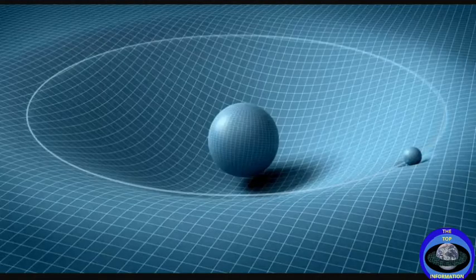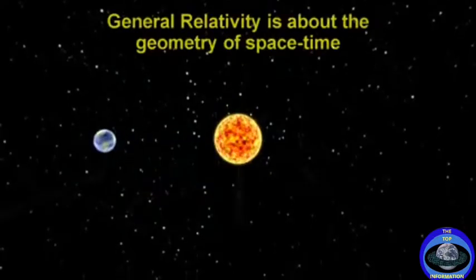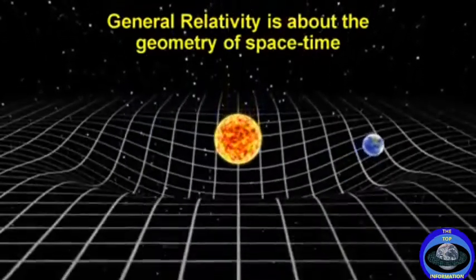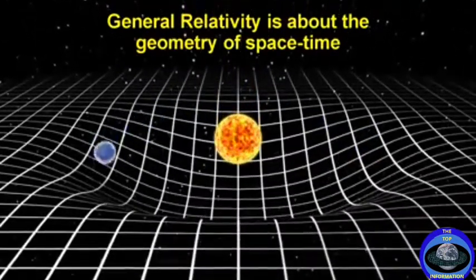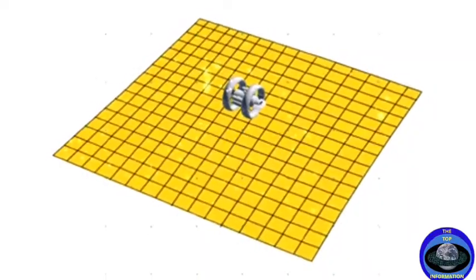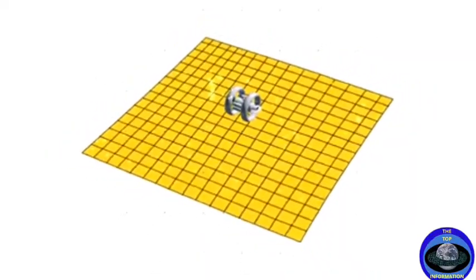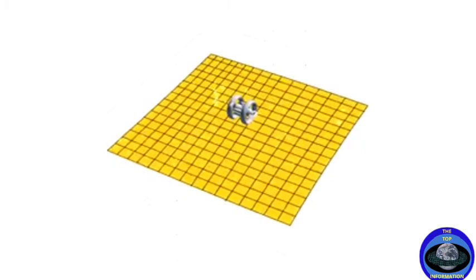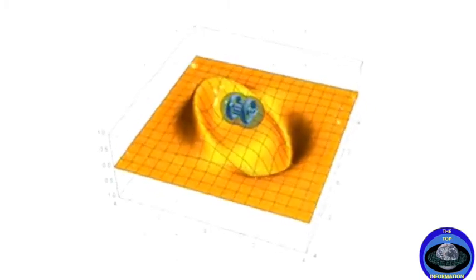He did this by manipulating Einstein's equations of general relativity. Einstein showed that gravity is a geometric warping of spacetime. By manipulating this geometry to look the way a warp field would look for a spacecraft, it would actually work.